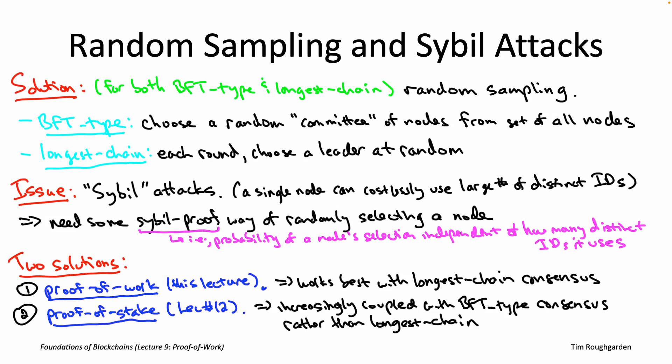You really need robustness to Sybil attacks. If you just choose a registered public key uniformly at random, an adversary could register under a billion different public keys and guarantee it gets selected at every single round. That would mean an adversary controlling only one node out of 99 honest nodes — just by generating lots of identities — could totally screw up your consensus protocol by getting selected as leader far more often than warranted.